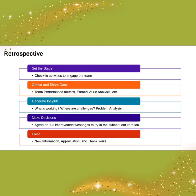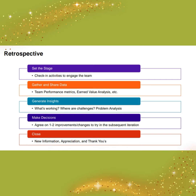Retrospection is where we need to improve, going through one stage at a time. There are five steps of retrospection: set the stage first, gather and share the data next, generate insights about what had happened, then finally make a decision, and then close the retrospection. These are the five stages of a retrospection.